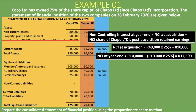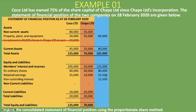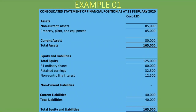The non-controlling interest of 12,500 rand goes into the equity section. Then we add the current liabilities — no intra-group trading, so we add the two together to get 40,000 rand. Our consolidated statement of financial position is now complete: total assets of 165,000 rand equals total equity and liabilities of 165,000 rand — they still balance. This is how the consolidated statement of financial position as at 28 February 2020 looks, showing the non-controlling interest portion, with the investment in the subsidiary removed and the subsidiary's share capital not included.